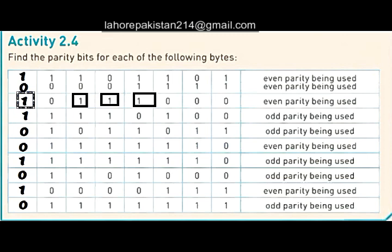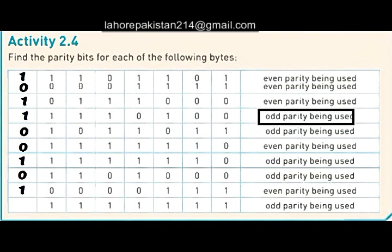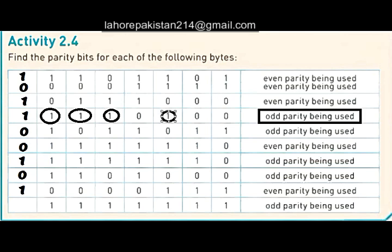Now let's look at the fourth part, in which we are supposed to make odd parity. The number of ones is one, two, three, four — and four is an even number. We want to make it odd, so we will add a one in the beginning.